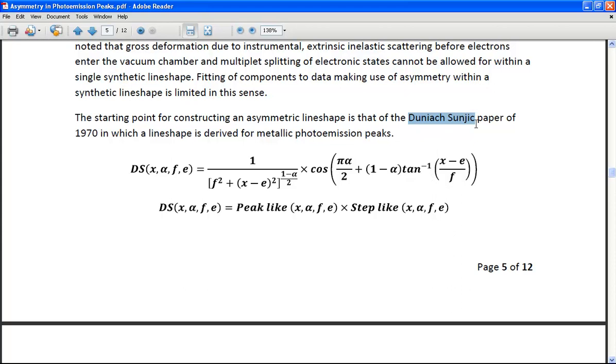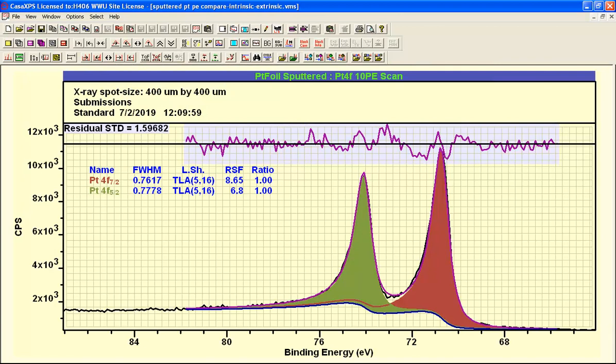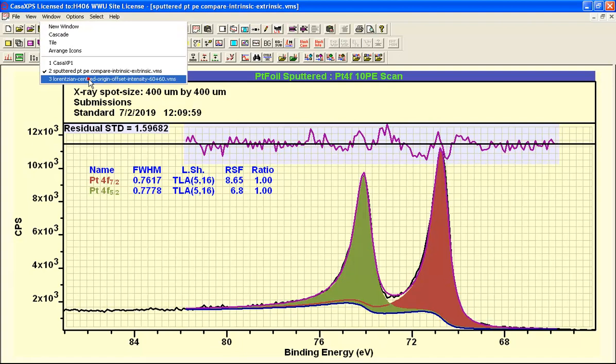A commonly used line shape is the DS line shape. This is a line shape that was derived from theoretical basis for metallic materials. The functional form looks like this, and it represents a peak-like structure and what I refer to as a step-like structure. It's a step-like structure for alpha greater than zero. If alpha is equal to zero, then this whole thing reduces to a Lorentzian. Let's have a look at this in CASA XPS.